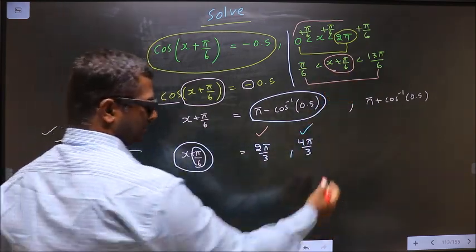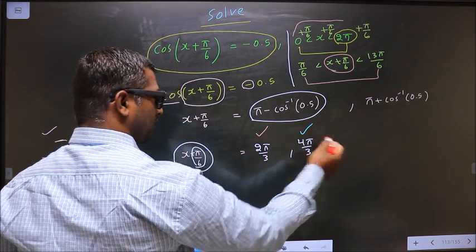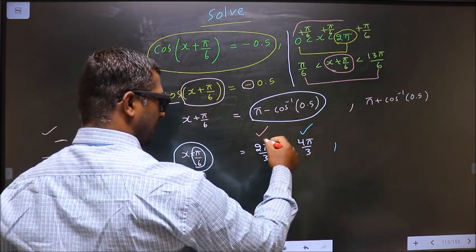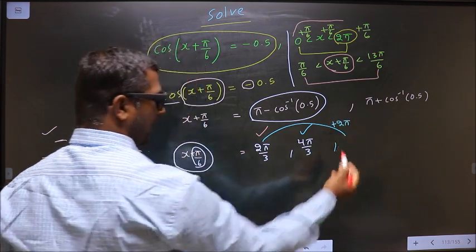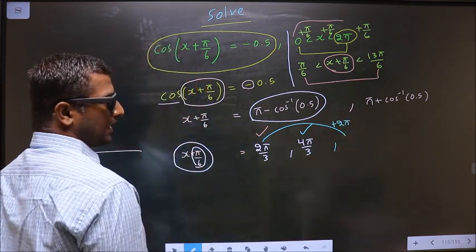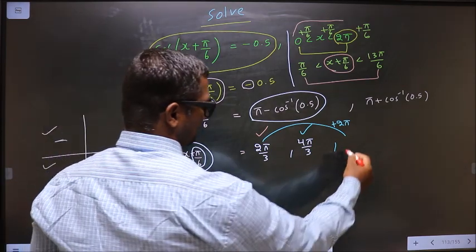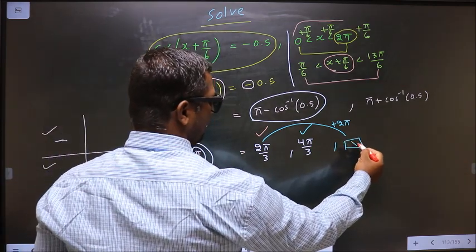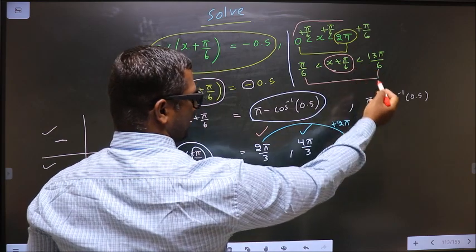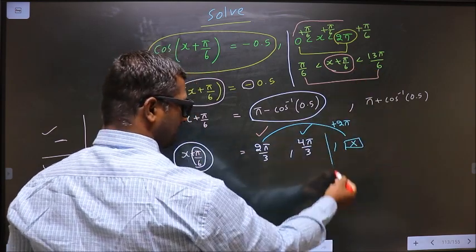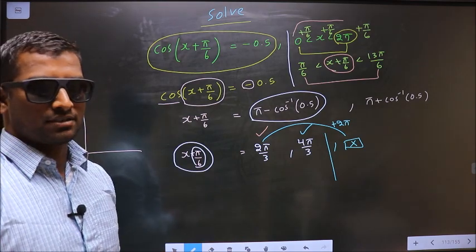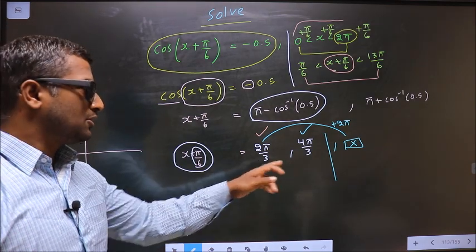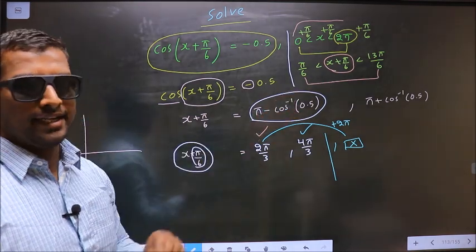Now to get another angle I should add 2π to this. If I add 2π to this I get 8π/3. That does not lie in this interval. So that confirms we do not need to find any more angles. Only these two angles lie in the given interval.